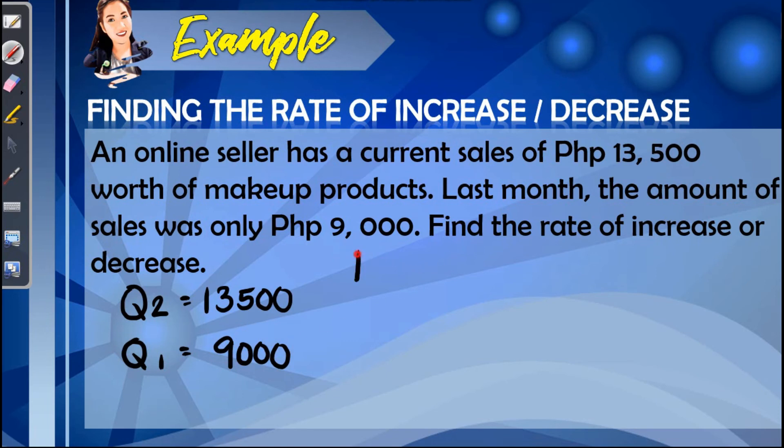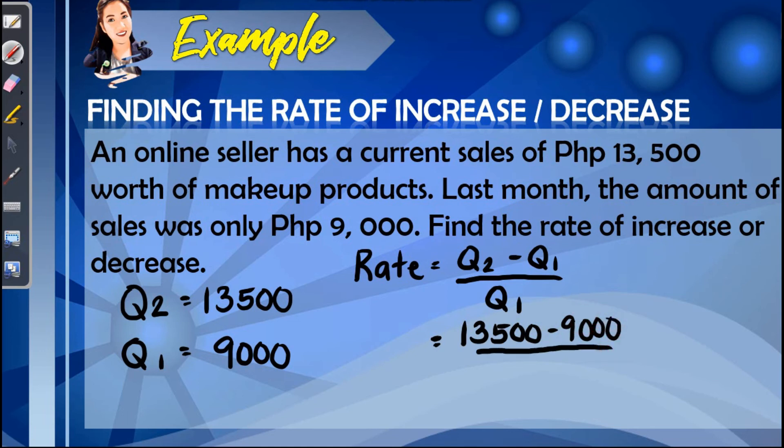Following the formula in finding the rate, we have Q sub 2 minus Q sub 1 all over Q sub 1. Substituting the given values, we have 13,500 minus 9,000 over 9,000. Simplifying the numerator, we have 4,500 divided by 9,000. And this gives us the value of 0.50.